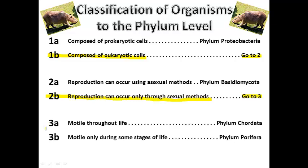After reading both statements 3A and 3B, I know that capybaras are able to move under their own power throughout their entire life. Therefore, I choose statement 3A. 3A is a terminal end of my dichotomous key, and tells me that capybaras are in phylum chordata. Looking back at my research, I know this is correct, so my dichotomous key works.